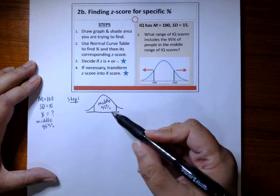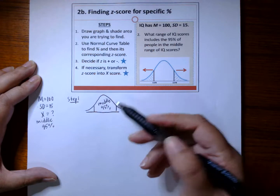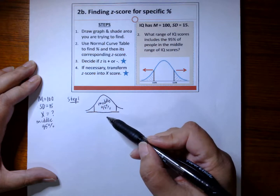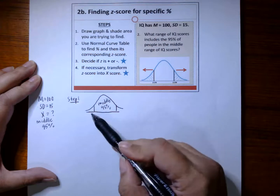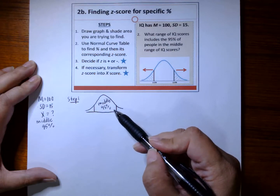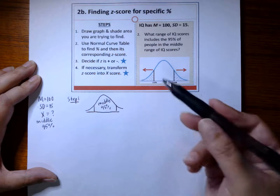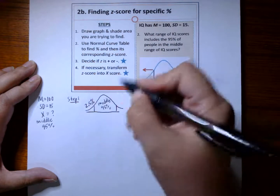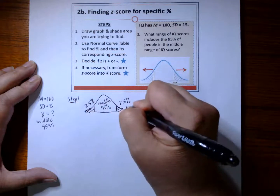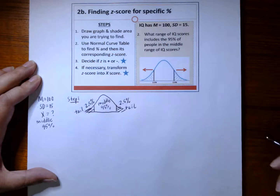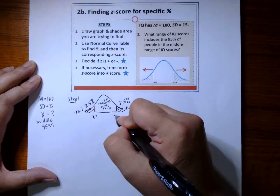Remember, a normal distribution's area under the curve adds up to 100%. So what's 100 minus 95? Five percent. We have 5% left over. Is the 5% all on one side? A normal distribution is symmetrical — whatever happens on one side has to happen on the other. So that remaining 5% has to be split equally: 2.5% on each side. We're really interested in what we've referred to as the tail — 2.5% in each tail.